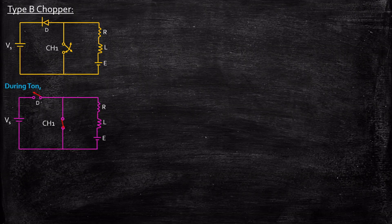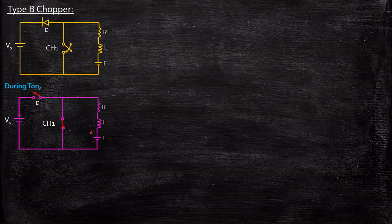During turn on, what happens is that the chopper will be energized. That is, we are going to give a gate pulse to chopper CH1. As a result, it is acting as a short circuit over here. And consequently, if you carefully observe, let us say this E is basically the back EMF of a motor — what happens is that this is positive and this is negative. So the power flow will be through this direction, and it flows through this direction, and it flows through this direction. The diode here is open circuited.